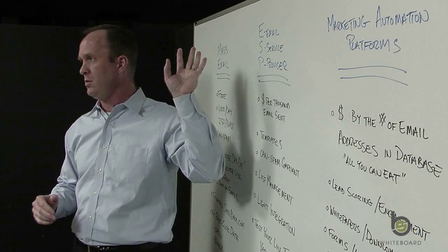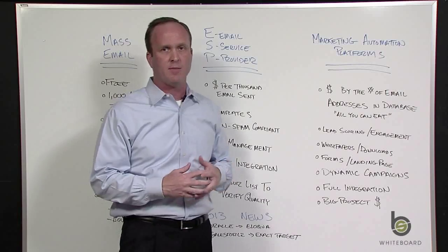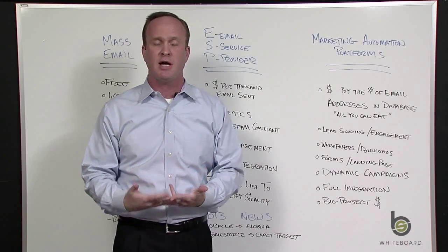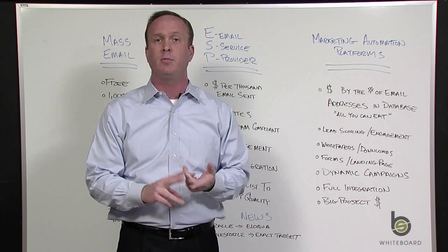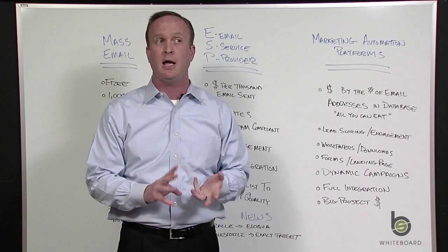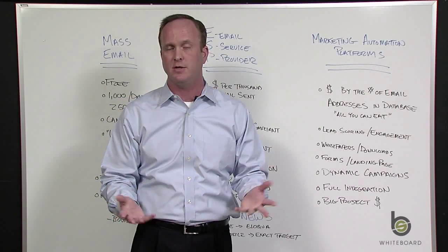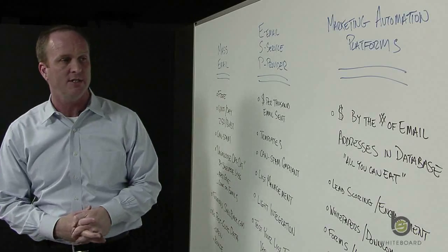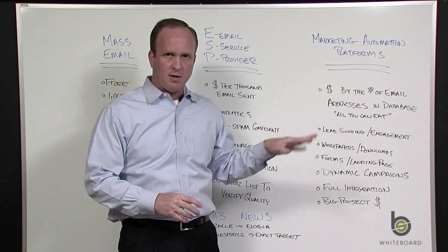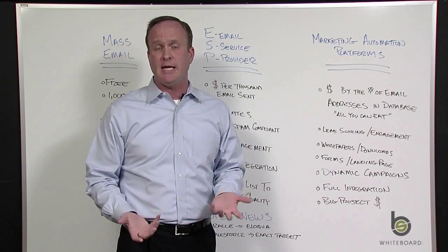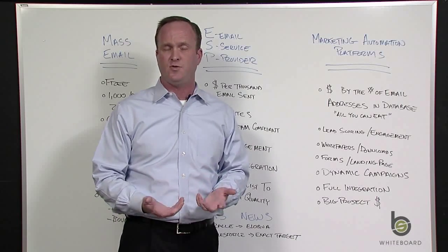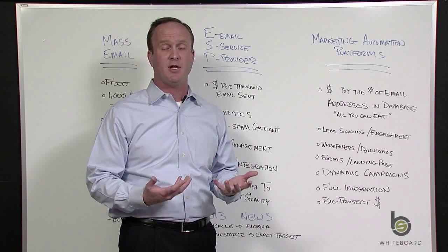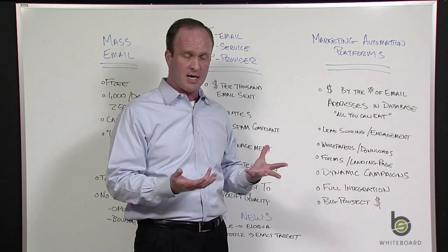The next big bucket is what I'm going to call marketing automation platforms. The ones most people think about are Eloqua, Marketo, Pardot, and Act-On, among others. The pricing model is a little different — typically all-you-can-eat. They don't charge you by the number of emails you send, but typically by the number of valid email addresses in your database, both leads and contacts.